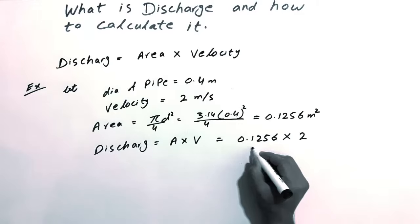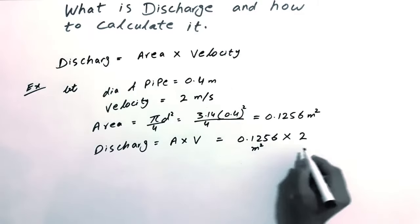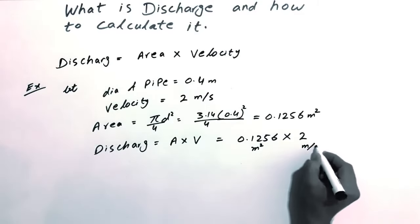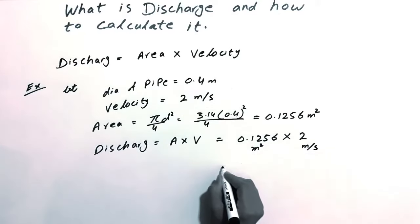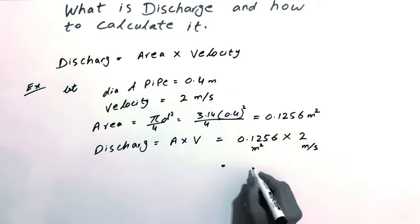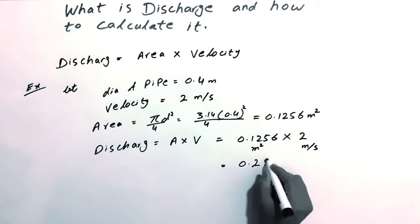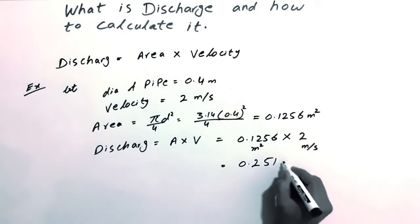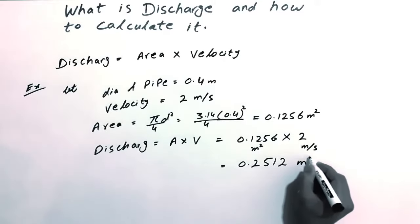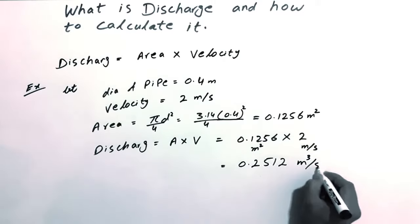The units are square meters times meters per second. So the final answer is 0.2512 cubic meters per second.